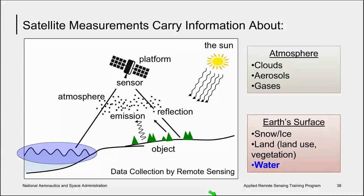Satellite measurements can be used to infer characteristics of several earth system spheres. Depending on the type of sensor and which part of the electromagnetic spectrum is used, information can be gained about the atmosphere, including clouds, aerosols, and gases, as well as the earth's surface, including snow and ice, land vegetation, and for our interests in the water.